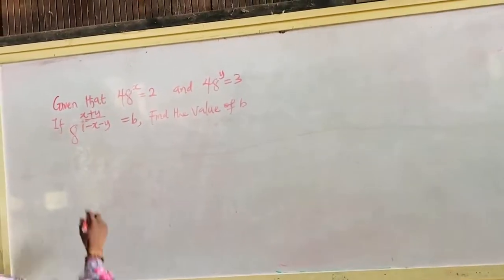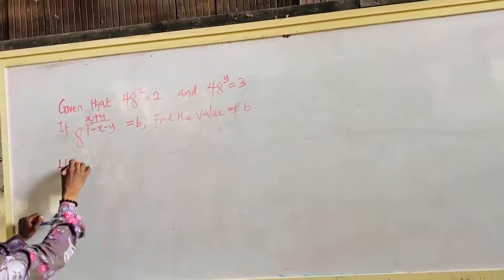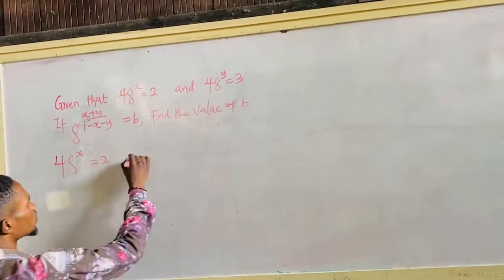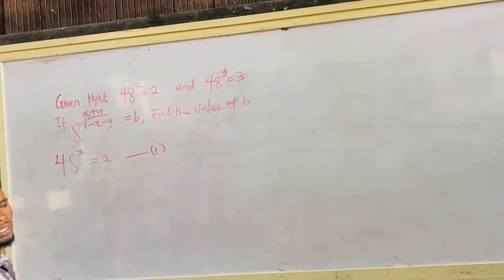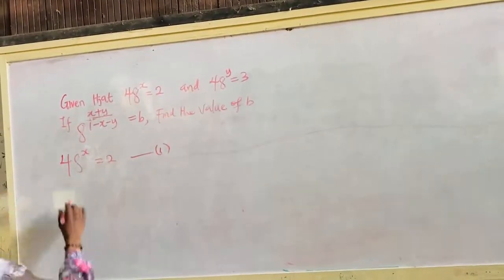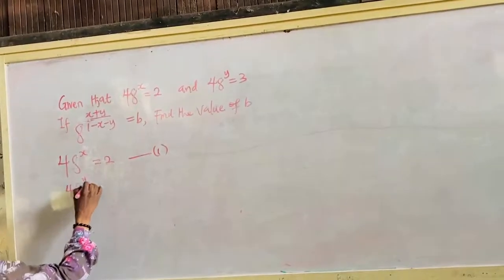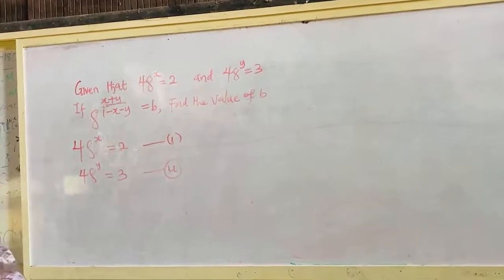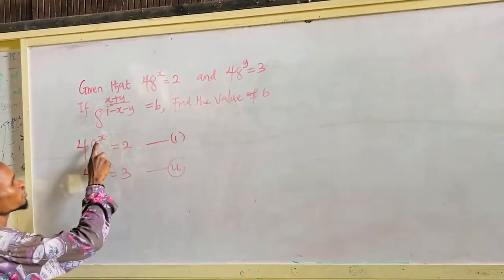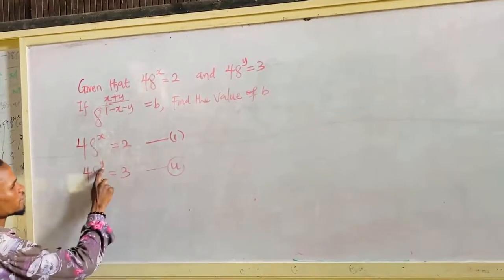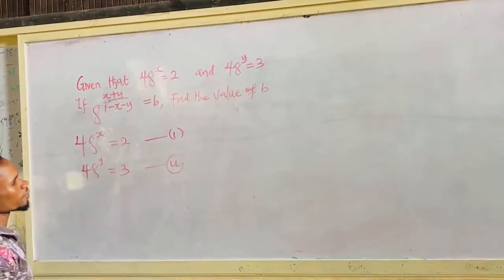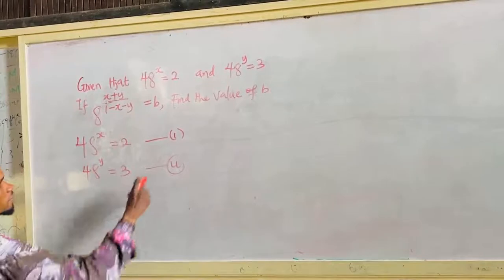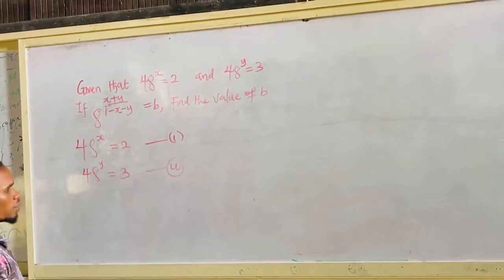Now this is 48 raised to the power of x, which is equal to 2. You can take this as equation 1. And 48 raised to the power of y is equal to 3, which is equation 2. Now this is an exponential equation because the unknown is at the power — the same thing here, exponential equation. Now for me to get the value of x and y, I can multiply equation 1 and equation 2 together.